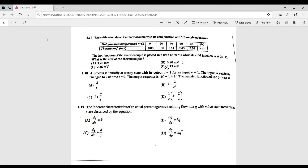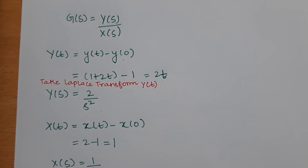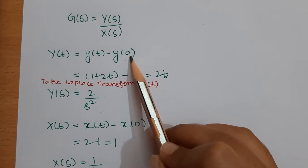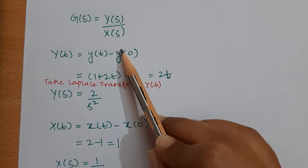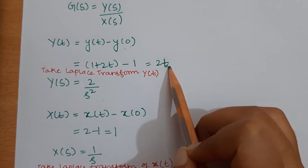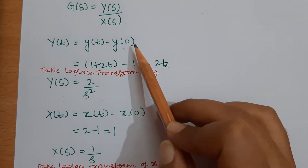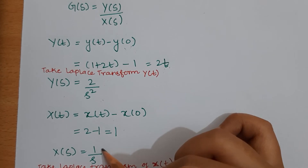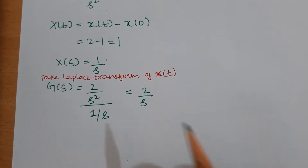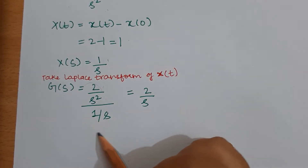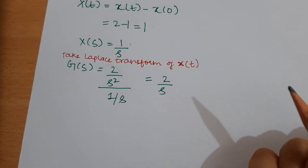Question 1.18: a process is initially at steady state with its given output and input. The input is suddenly changed to 2 at time t = 0, and the output response is also given. We must find the transfer function G(s) = Y(s)/X(s). Introducing deviation variables as differences from steady-state values, we get Y(t) = 2t. Taking the Laplace transform gives Y(s), and similarly X(s) is found. Therefore the transfer function Y(s)/X(s) = 2/s.